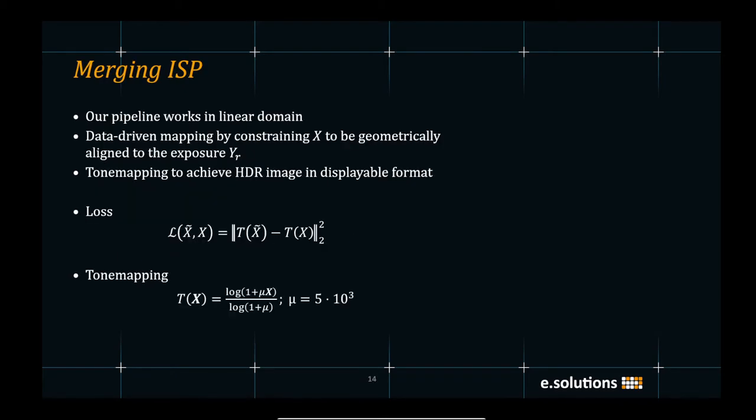Our pipeline works in the linear domain. We use data-driven mapping by constraining the HDR image X to be geometrically aligned with the reference exposure. To train our network, we use the L2 loss function on the tone mapped version of the prediction and the ground truth HDR image X.